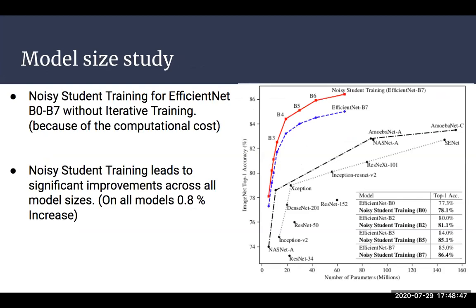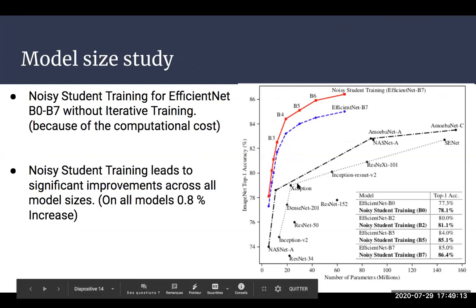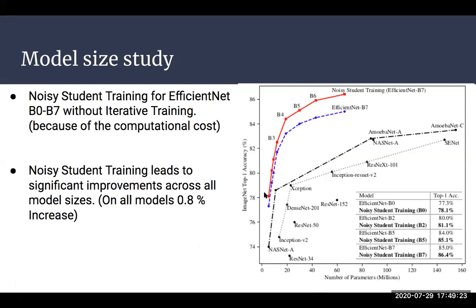This plot is about the size of the model and scaling up. For noisy student training on EfficientNet from B0 to B7, without iterative training — just one training pass — we notice that this model leads to significant improvement across all other models, with about 0.8% increase comparing to EfficientNet without noisy training or scaling up, and much better than the other models.